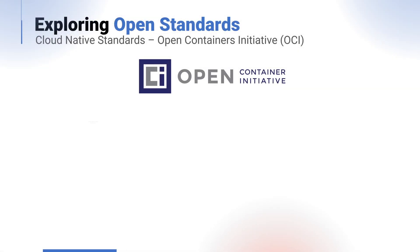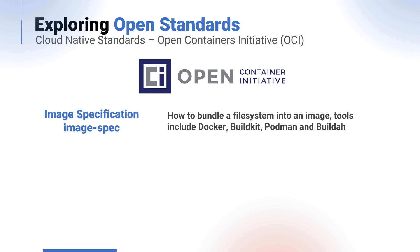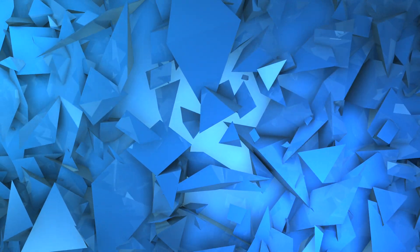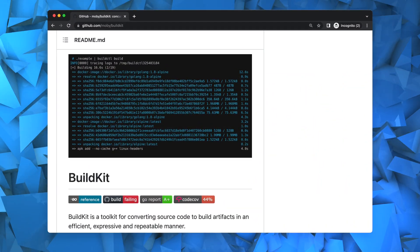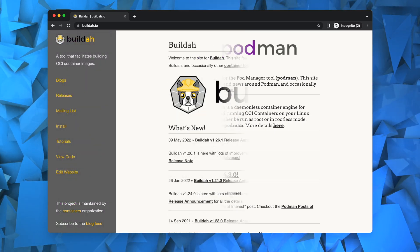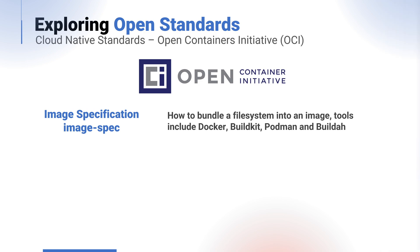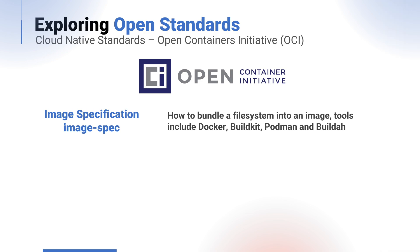The image specification outlines how a file system bundle should be packaged into an image. With this standard, there are now a variety of build tools that can be used to create OCI images — for example, BuildKit, Podman, and Buildah, amongst others. You could use any of these and you'll have an OCI compliant container image.